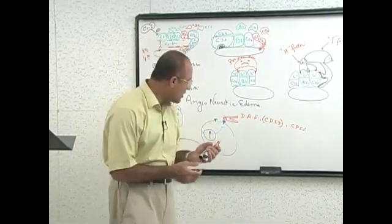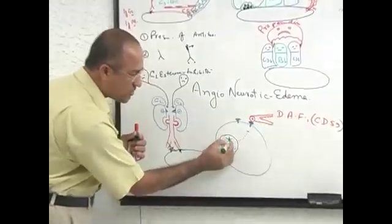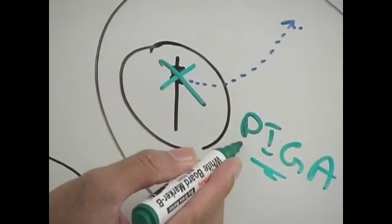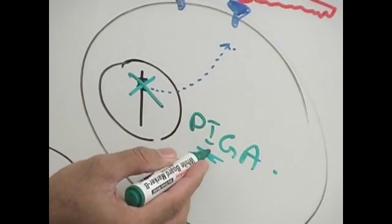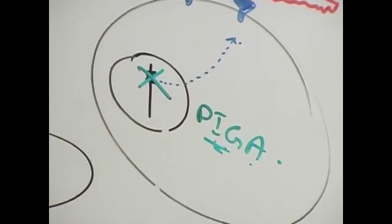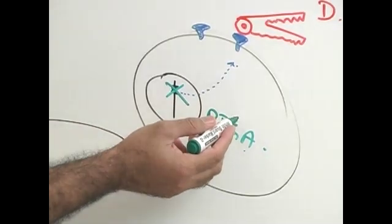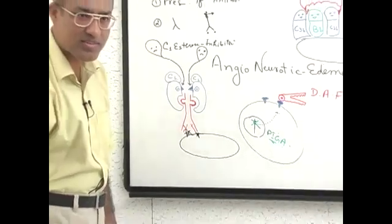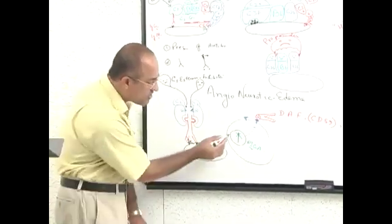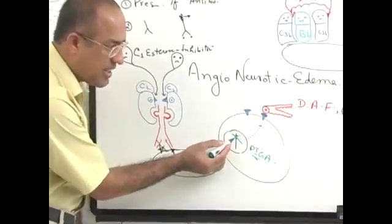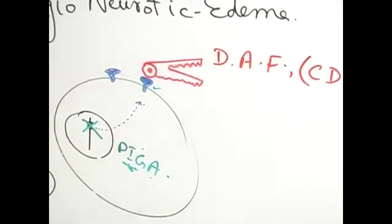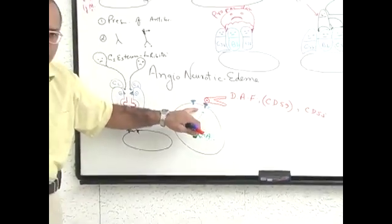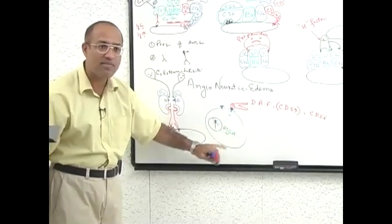There is a disease involving the PIGA gene — phosphatidylinositol glycan A protein. This gene produces a protein, which produces an enzyme, and that enzyme produces the anchor proteins. If this gene is mutant, you cannot produce these anchor proteins and they cannot properly anchor in the cell membrane.